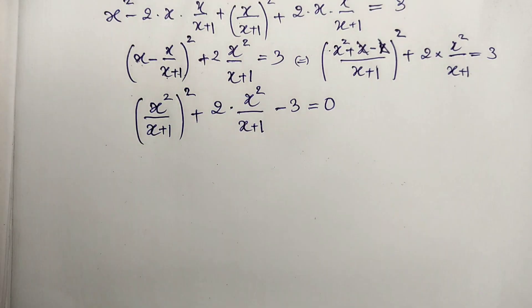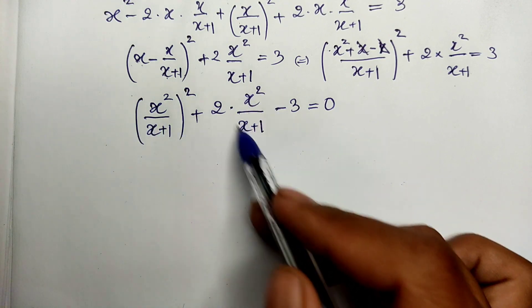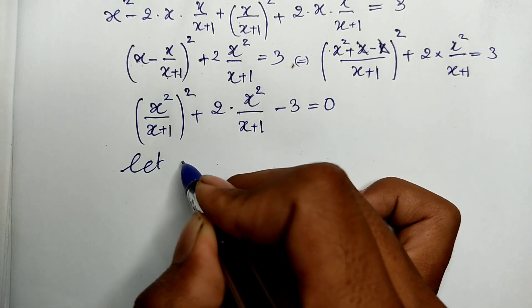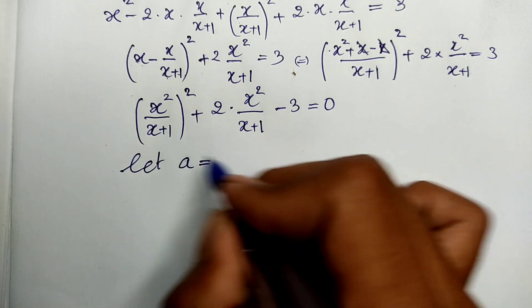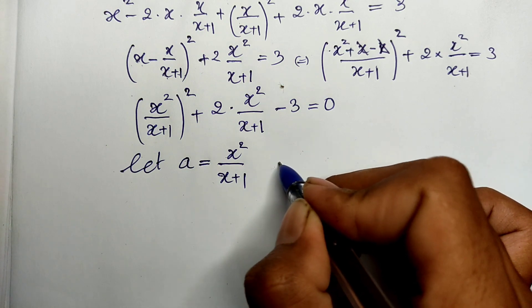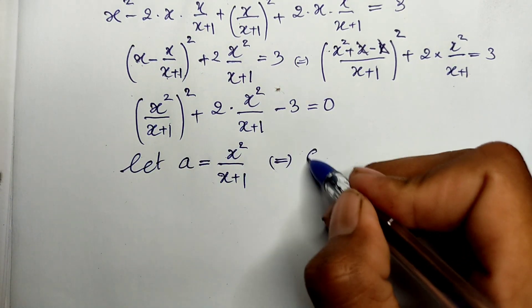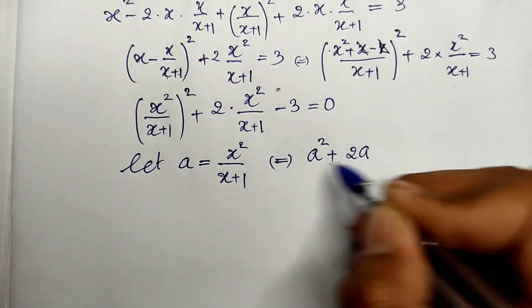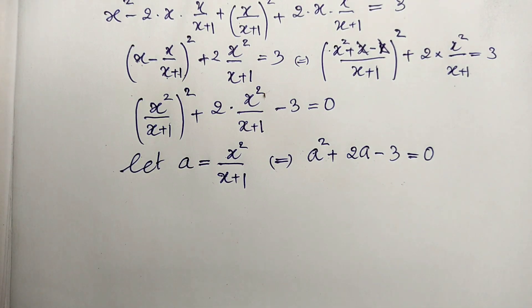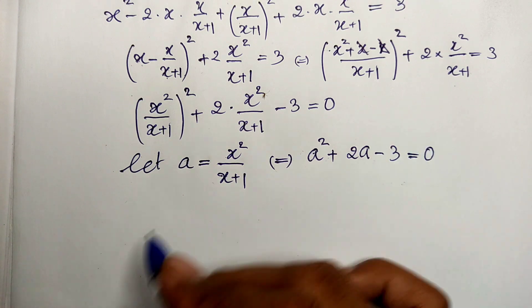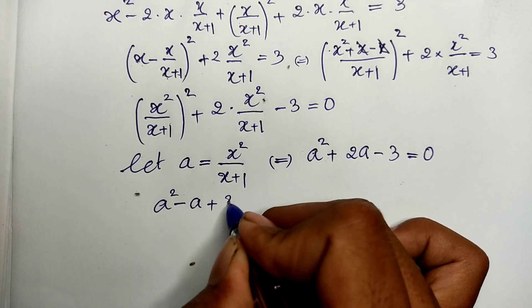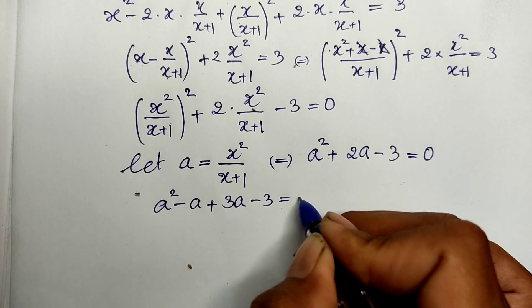Now let's see that each half of this expression is the same. So I let a equal h squared divided by (h plus 1). Then the equation becomes a squared plus 2a minus 3 equals 0, which we can rewrite as a squared minus a plus 3a minus 3 equals 0.